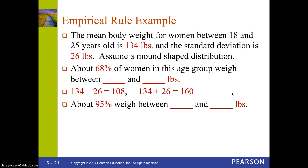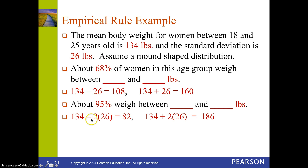Similarly, I can do the same thing for the 95%. Remember, that's within two standard deviations of the mean. So I take 134 minus two standard deviations — the standard deviation is 26 — giving the mean minus two standard deviations and the mean plus two standard deviations. So about 95% of women between 18 and 25 years old weigh between 82 and 186 pounds.